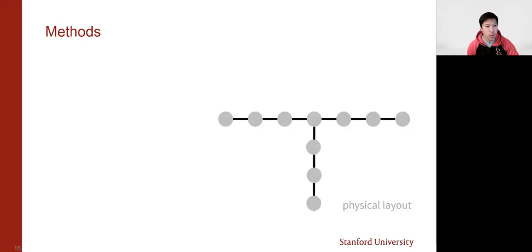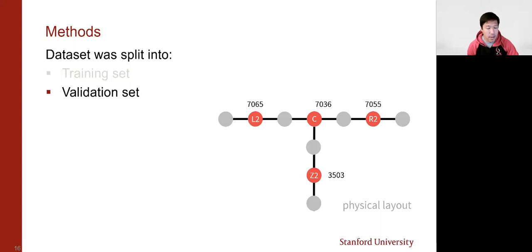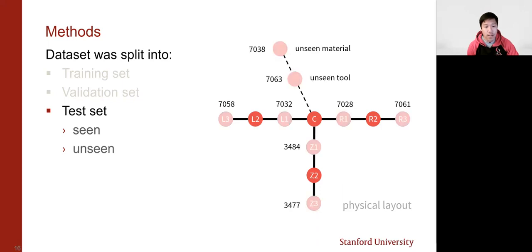Our dataset was split into a training set and validation set consisting of the four configurations shown in the diagram right now. We also use these four configurations for the test dataset, but we extended the test dataset to eight more unseen configurations.